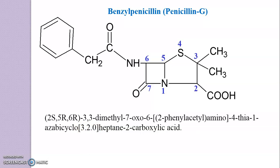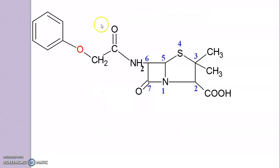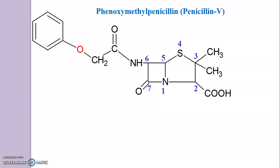Now, simply, you have to introduce an oxygen atom in between this methyl and phenyl ring. So, this formed compound is nothing but phenoxymethyl penicillin. That is Penicillin V. So, accordingly, you have to remember where the changes are, so you can easily draw further derivatives of penicillin or different penicillin structures.